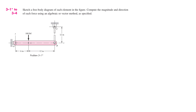Question 3.1: Sketch a free body diagram of each element in the figure. Compute the magnitude and direction of each force using an algebraic or vector method as specified. The question basically asks us to calculate the reaction forces on points O, B, and C due to the external forces acting on A. To solve this, we need to first draw a free body diagram as shown here.